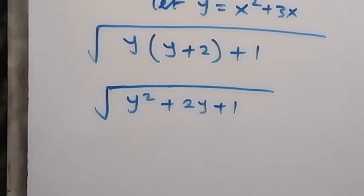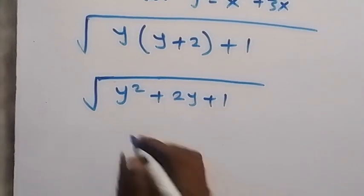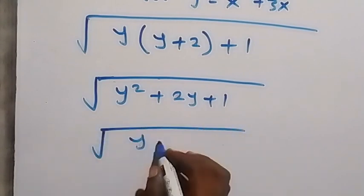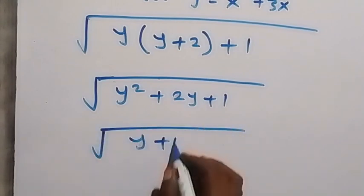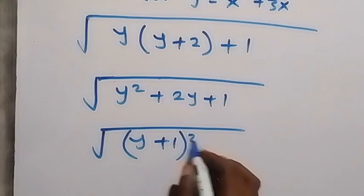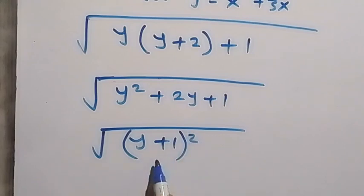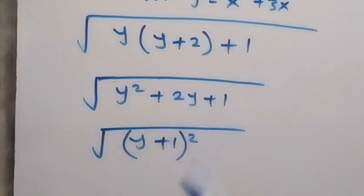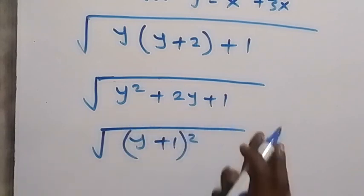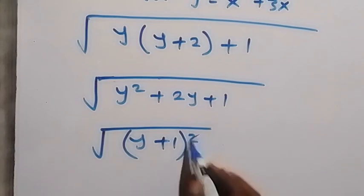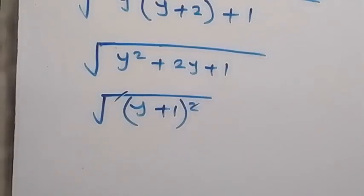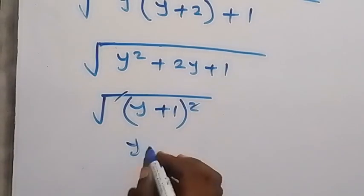From here we can simply write this as the square root of y plus 1, all squared. When we expand this it gives us y squared plus 2y plus 1. Then the square cancels the square root, and what we have is simply y plus 1.